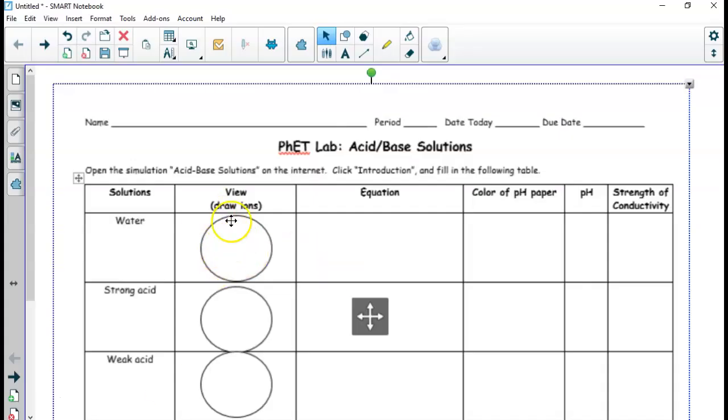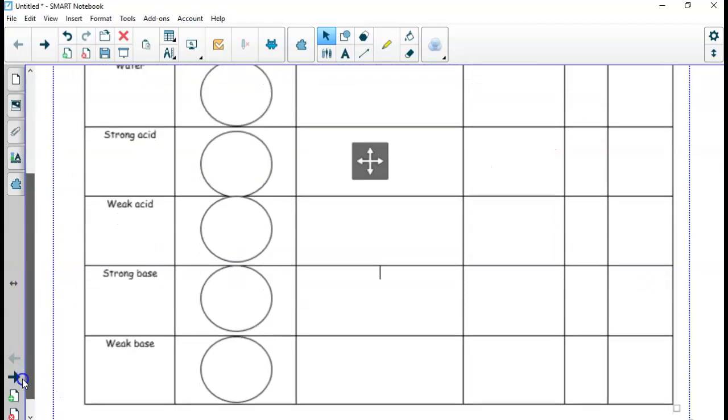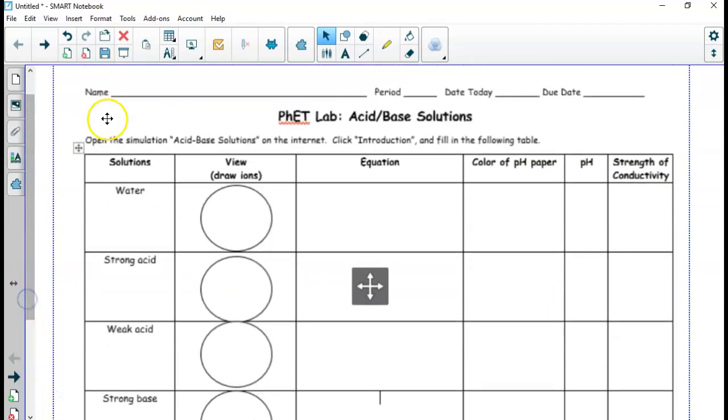So on your paper, you're going to test all of those guys out. And you're going to draw, if there's a few ions or a lot, write the equation that's under the picture. What color was the pH paper? What number did the meter say? And then how did the light bulb? Was the light bulb bright or dim or did it not shine at all? So you're going to do that for all of those possibilities. That's the first page.